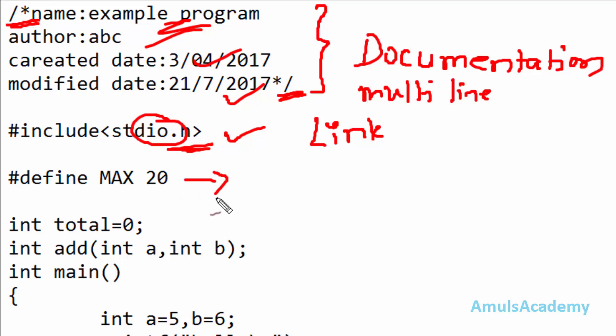This is the third section, called the definition section, where you can define symbolic constants. This is the syntax: #define, then the name in capital letters, and then the value.